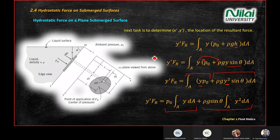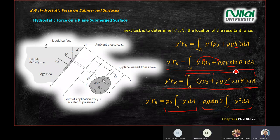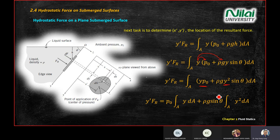The first term ∫Y dA equals YC·A — the first moment of area. The second integration ∫Y² dA is the second moment of area, called Ixx or Iyy from statics. The trick is: Ixx = Ixx-hat + A·YC², where Ixx-hat is the centroidal second moment of area. So you replace ∫Y dA with YC·A and ∫Y² dA with Ixx-hat + A·YC².